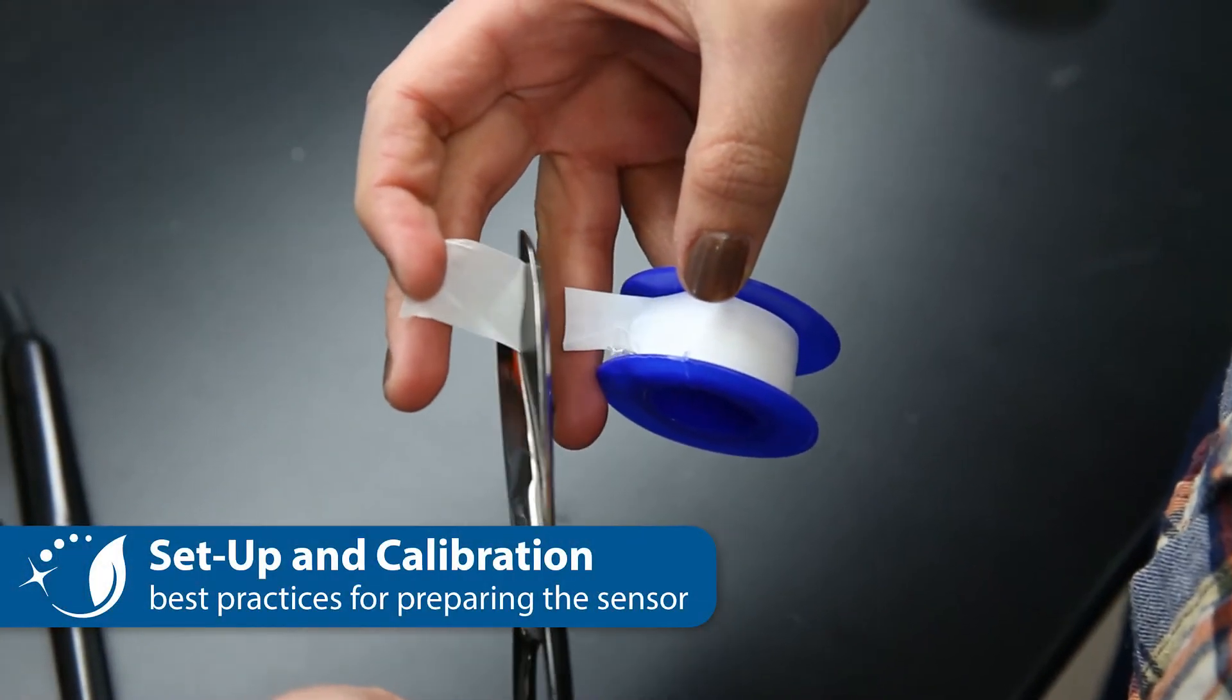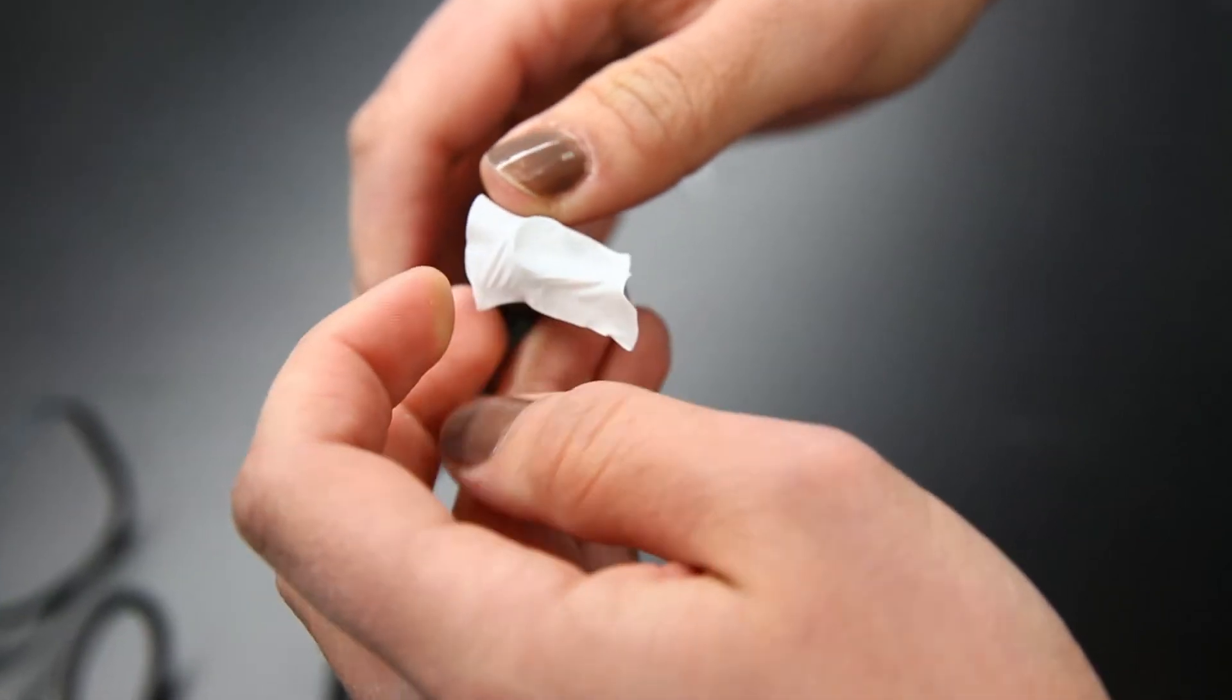Between each class use and before calibration, try to replace the permeable membrane on the end of the probe.